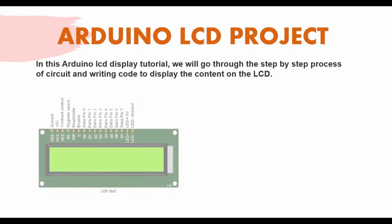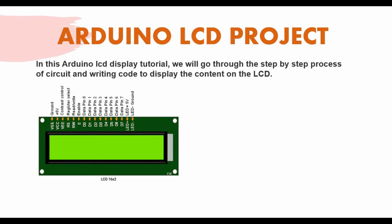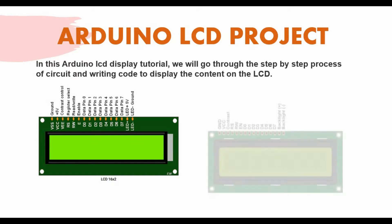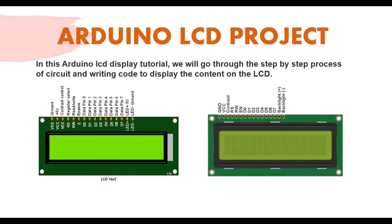Usually if you go for this project you can go for a 16 by 2 LCD. When you do the connection you may see two kinds of LCD in practical cases where some of the pins will be different. One LCD shows VSS, VCC, VEE, RS, RW, E, and LED minus and plus. But some LCD displays show the first pin as ground, then VCC, contrast, RS, RW, then data pins, and the plus and minus for the LED. The naming will be a little bit different but the connections are the same.